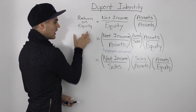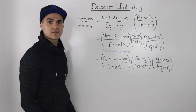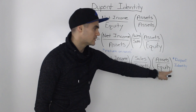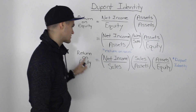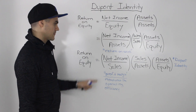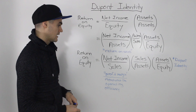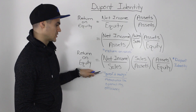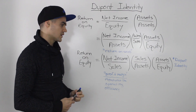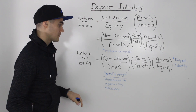So basically, we took return on equity and broke it down into three separate components. Taking return on equity and breaking it into these three components is what the DuPont identity is — this whole expression is called the DuPont identity. The first component, net income over sales — both figures from the income statement — is called the profit margin ratio. The profit margin ratio measures the operating efficiency of a company, and it's an organic source for return on equity.